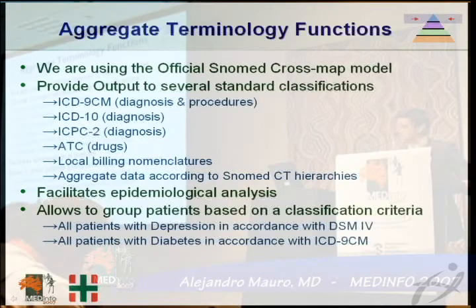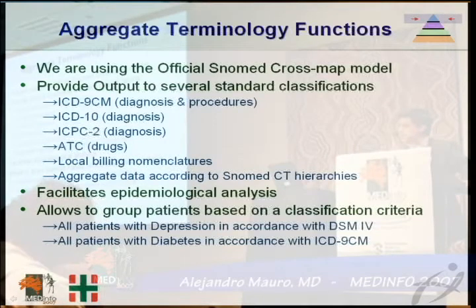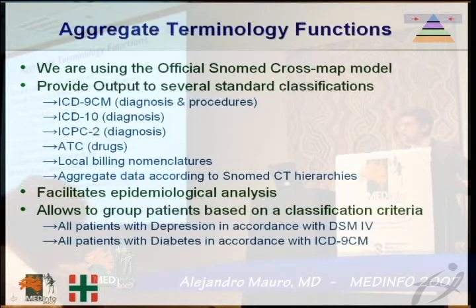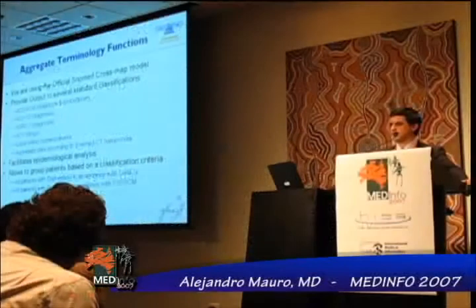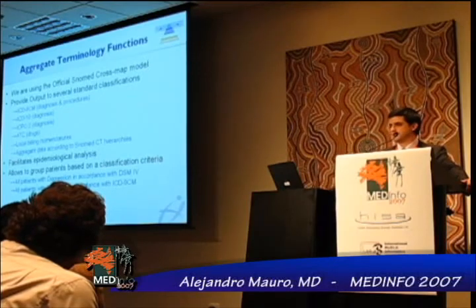For example, we can group all patients with depression in accordance to DSM-4, which is the mental disease classification, or all patients with diabetes in accordance to ICD-9. This is very useful for research purposes.